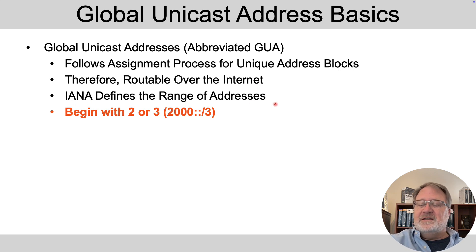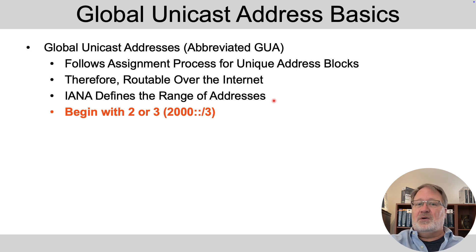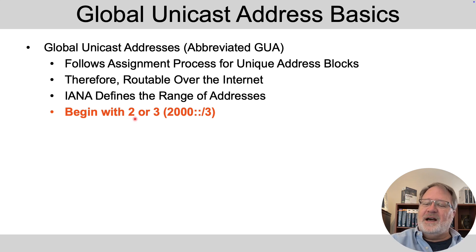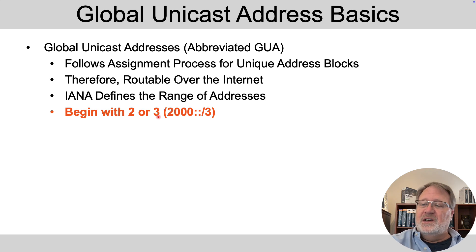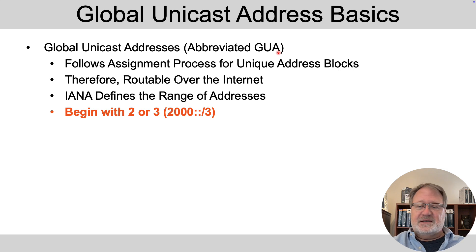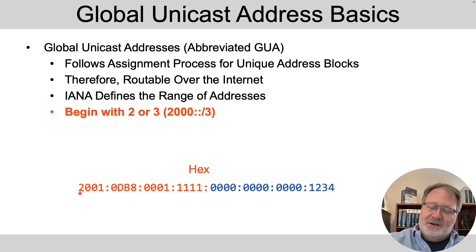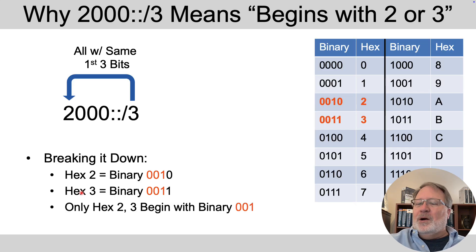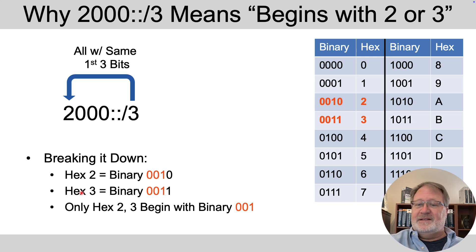IANA defines the range of addresses that fit into this. Just like with IPv4 — where some addresses were class A, class B, class C, or multicast — for IPv6, IANA defines that all addresses beginning with hex digits 2 or 3 in the very first hex digit are reserved for global unicast addresses. The abbreviation representing all GUAs as defined by IANA today is 2000::/3.